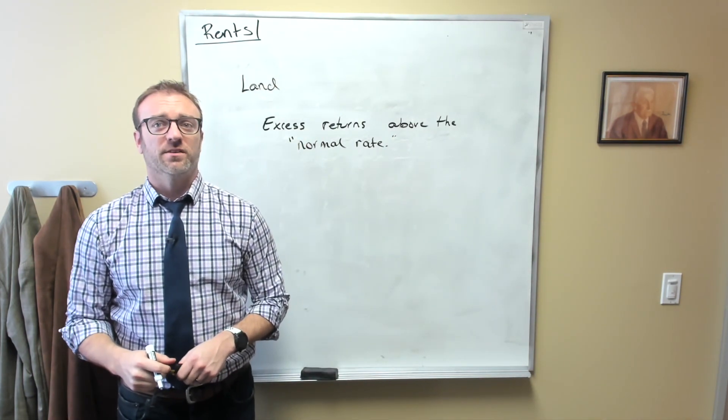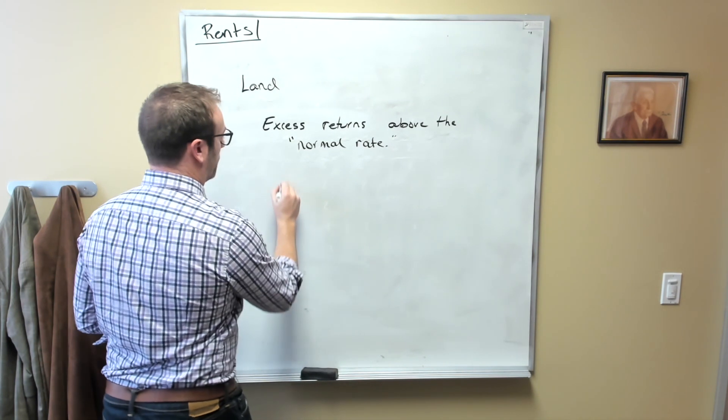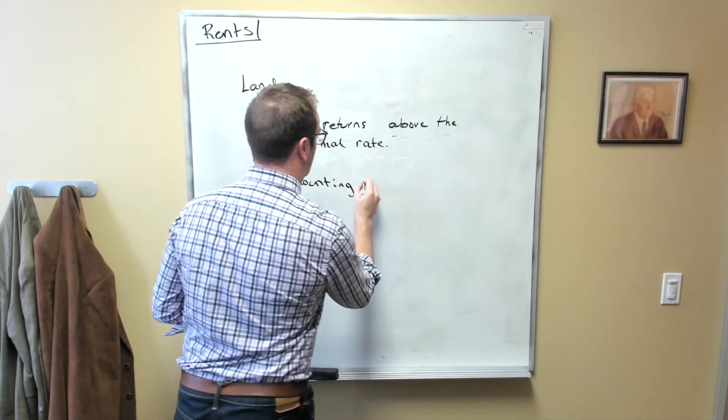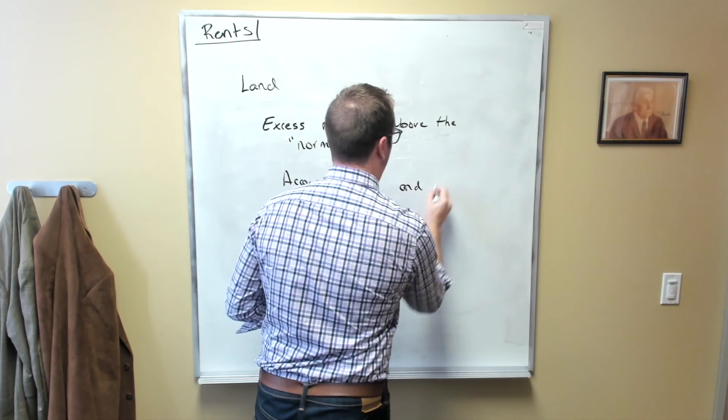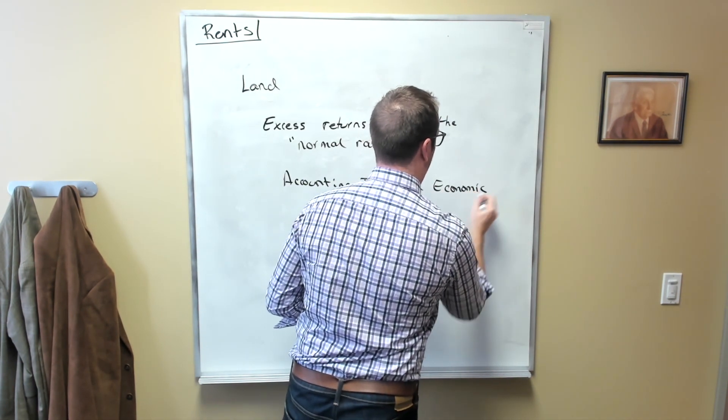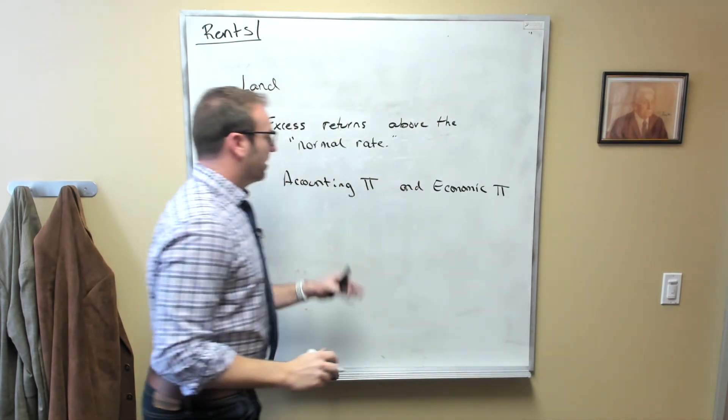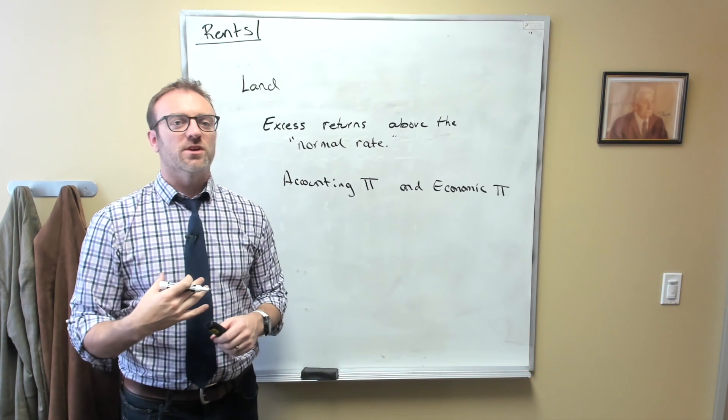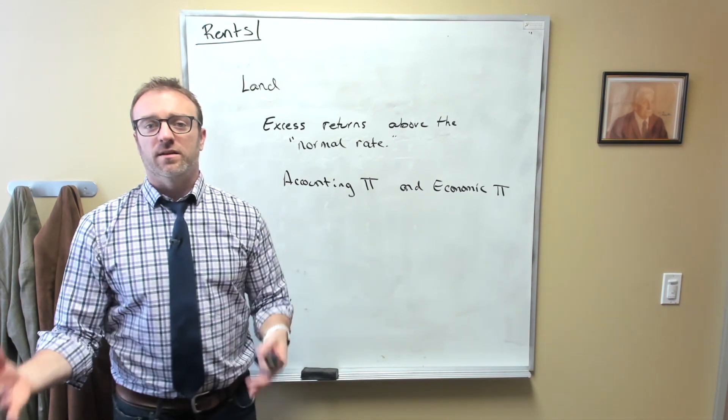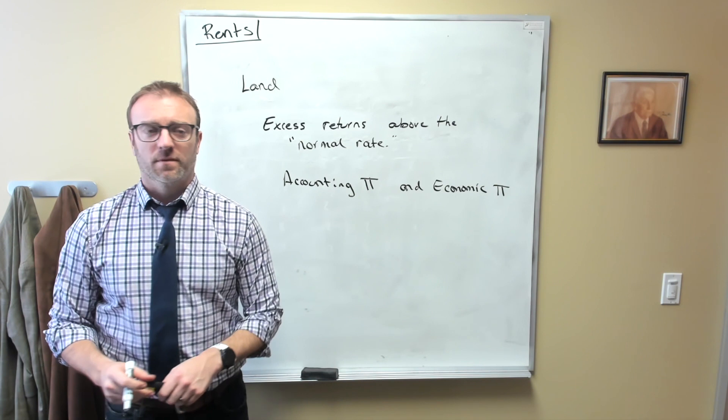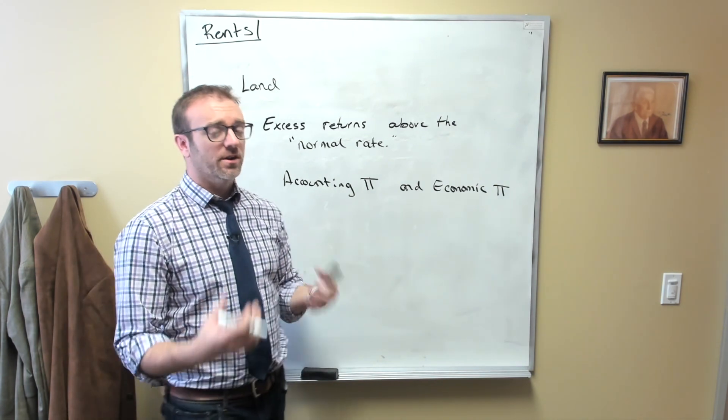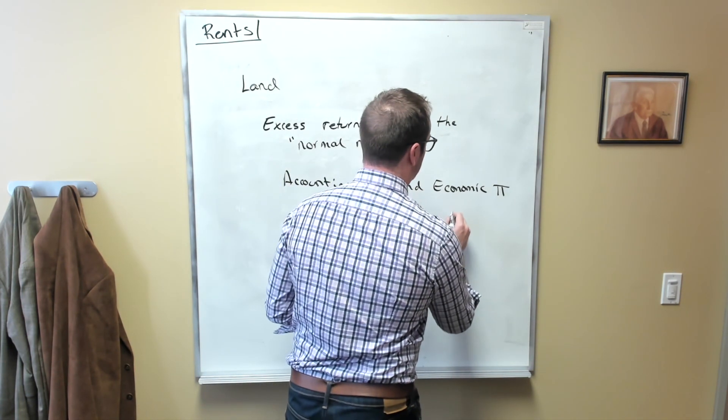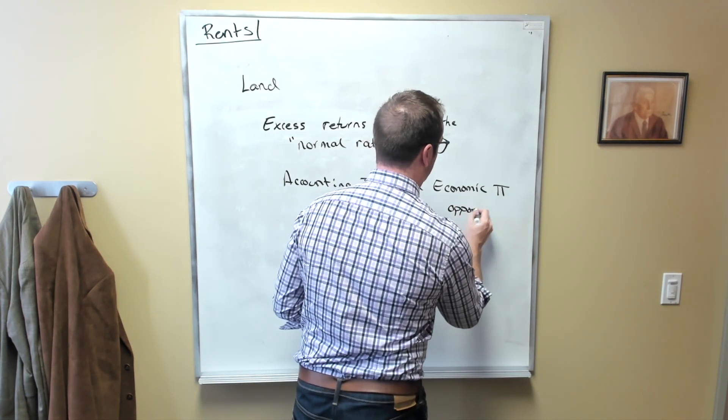What Dr. Tolleson is getting at is this idea of the difference between what we can call accounting profit and economic profit. Accounting profit would be a comparison of the number of dollars that you take in and the number of dollars that you spend to achieve that income. We would simply subtract revenues minus expenses. Economic profit, however, keeps in mind the idea of opportunity cost.